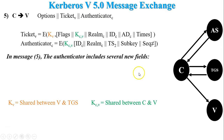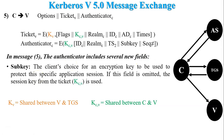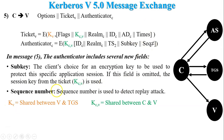In the request message, the Authenticator includes several new fields. The first field is sub-key, meaning sub-session key, which is generated from the session key KCV by the client. Each new connection has a new sub-session key. If the sub-session key field is omitted, the session key from the ticket KCV is used. The last field of Authenticator C is sequence number, which is used to detect replay attacks during client-server communication.